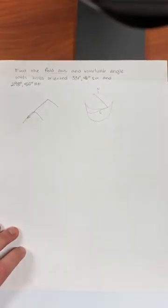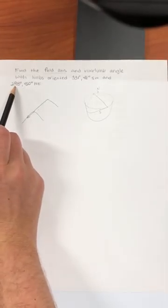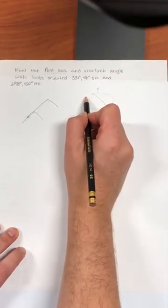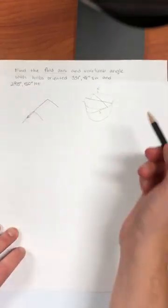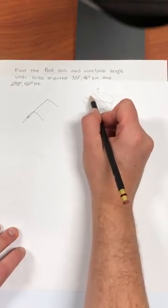So maybe it hits the bowl like that. And this one is striking 298, which is not as far. Remember west is 270 so 298 might be like that. And this one is dipping to the northeast and it's dipping a little more steeply than the previous one.